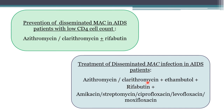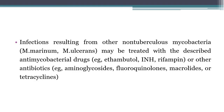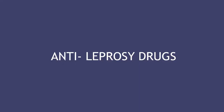For treatment of disseminated MAC infection in AIDS patients, give azithromycin or clarithromycin plus ethambutol plus rifabutin; if a fourth drug is needed, add amikacin, streptomycin, ciprofloxacin/levofloxacin, or moxifloxacin. Treatment is given for one year. Other non-tuberculous mycobacteria such as M. marinum and M. ulcerans produce cutaneous infections and may be treated with anti-mycobacterial drugs (ethambutol, isoniazid, rifampin) or other antibiotics.